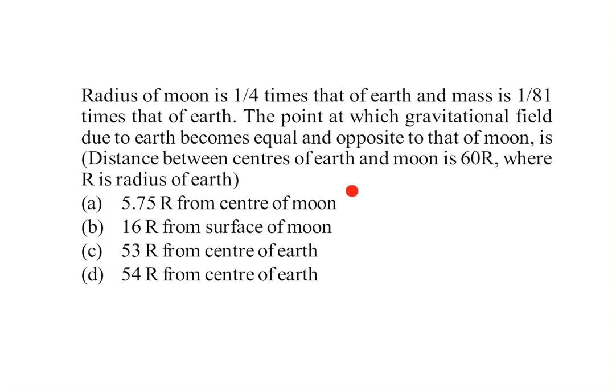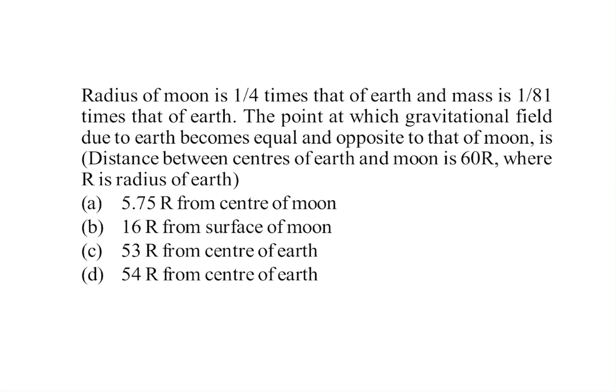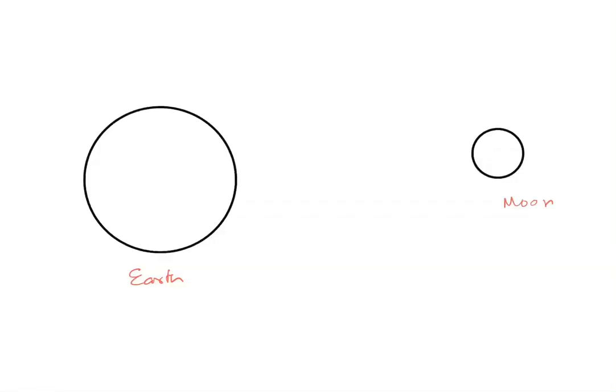Where R is the radius of earth. Four options are given, mark your answer. So this is your earth and this is your moon. Radius of moon is 1/4 times that of earth, so if the radius of earth is R, radius of moon will be R/4.